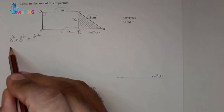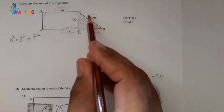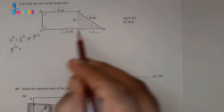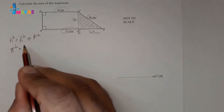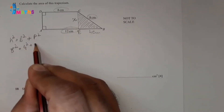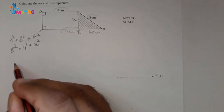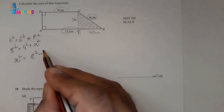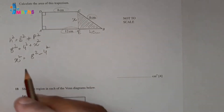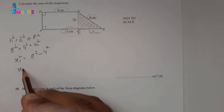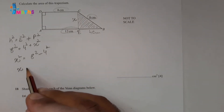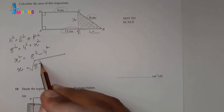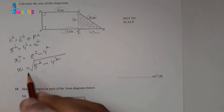Let CE be x. Applying Pythagoras' theorem: 8 squared equals 4 squared plus x squared. We can find the value of x squared, which is 8 squared minus 4 squared. So x equals the square root of 8 squared minus 4 squared.